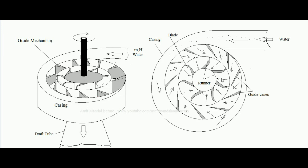When water hits the blades of the runner, a force is developed and torque is produced over the runner. That torque and rotational power are supplied to the shaft. This is a top view of the machine. When the runner rotates, rotational power is developed on the shaft, and water collects at the center and leaves the system in the axial direction.